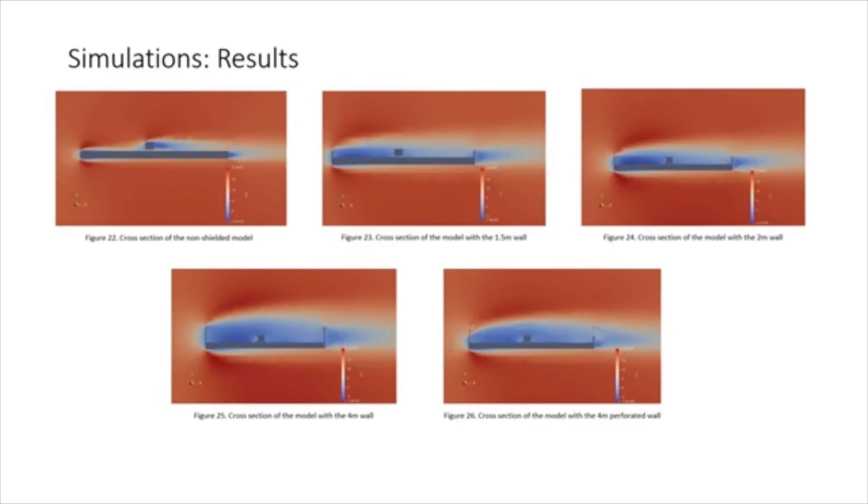Figures 22 to 26 show the wind velocity at the selected cross-section of five models with different windshield strategies. It is very clear that the existence of the windshield walls can significantly reduce the wind velocity around the vehicles.